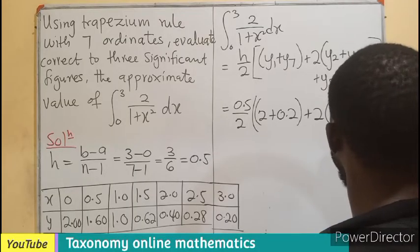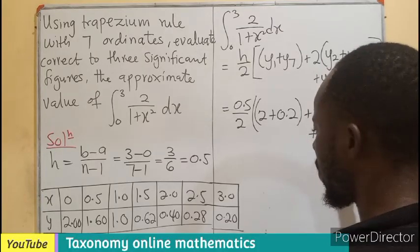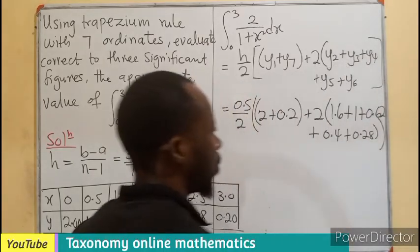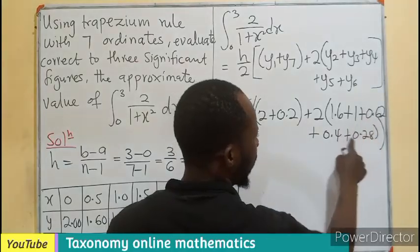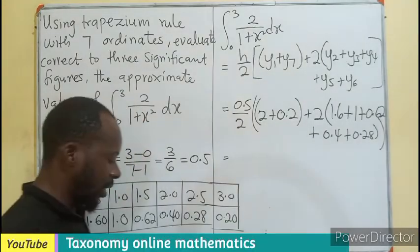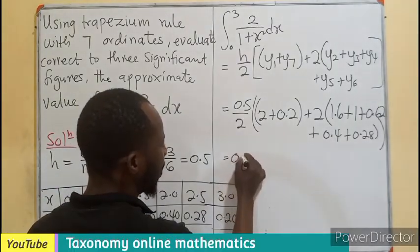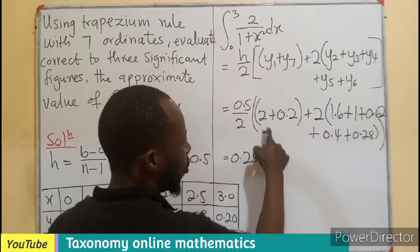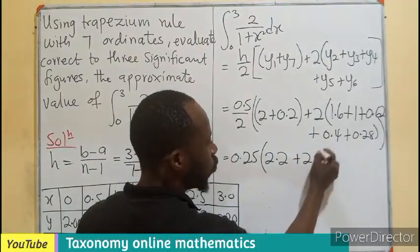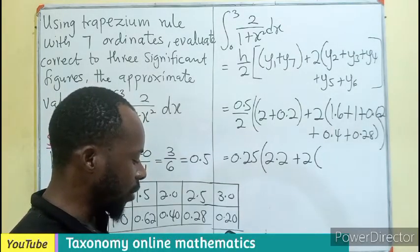This will be plus 2 into bracket the sum of the remaining entries of y: 1.6 plus 1 plus 0.62 plus 0.4 plus 0.28. If we divide 0.5 by 2 we get 0.25, multiplying the sum of this which is 2.2.